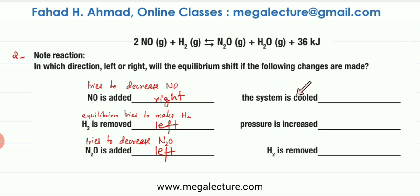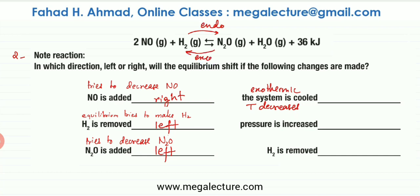The next part is that the system is cooled, which means temperature decreases. When temperature decreases, the exothermic reaction is going to be favored. The enthalpy change for the forward reaction is given as positive, which means the forward reaction is endothermic and the backward reaction is exothermic. So if you cool the system, the backward reaction is favored and the equilibrium shifts to the left-hand side.